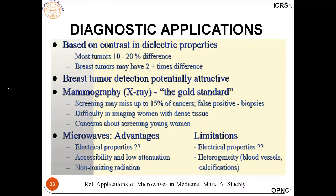Based on contrast and dielectric properties, we find a 10 to 20 percent difference, and tumors may show two types of difference depending on the type and location. Tumor detection is potentially attractive for mammography. Microwaves have advantages of good electrical properties, accessibility, low attenuation, and are non-ionizing — that is most important. Microwaves are non-ionizing radiation, so they do not have the harmful effects of x-rays and similar modalities.